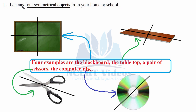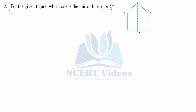Question 2: For the given figure, which is the mirror line — L1 or L2? On which line should the mirror be placed to get the whole picture? L1 will not work because the triangle would come down, but L2 will definitely produce the other part of this house-like figure. So L2 is correct in this case — L2 is the mirror line.